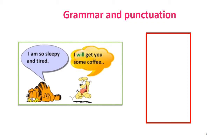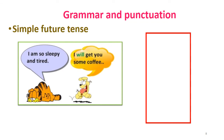Now we are going to discuss the grammar section. If you look at this picture, I think everyone knows these favourite cartoon characters — Garfield and Odie. Garfield is telling: 'I am so sleepy and I am too tired.' Odie's reply is: 'I will get you some coffee.' Odie is going to do something. What is the tense of the sentence 'I will get you some coffee'? We call that simple future tense. You can identify simple future tense by the helping verb 'will'.